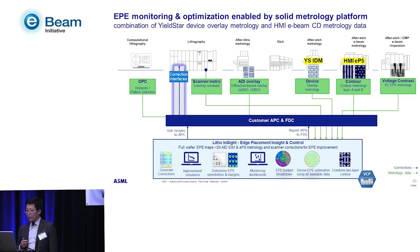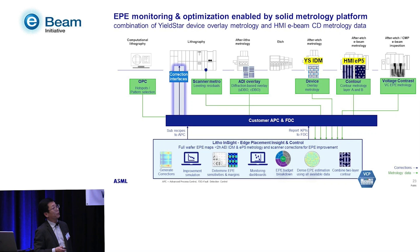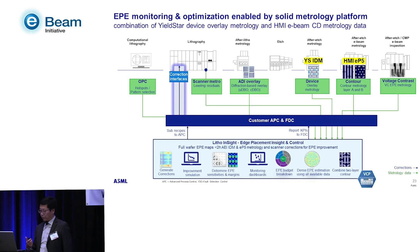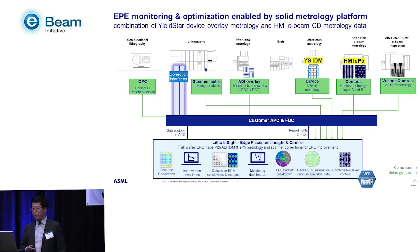My last slide looks at how ASML pieces together all these different solutions — from OPC in the R&D phase all the way to scanners, passing through etch. We offer USTAR in-device metrology for after-etch overlay, the HMI EP5 metrology, and voltage contrast inspection to validate electrically-driven yield and the link to EPE. Everything feeds into the customer's APC and FDC system, with an AI insight layer running on our virtual computing platform to provide an integrated solution. Thank you very much.